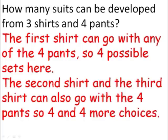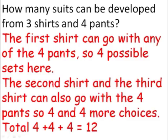Similarly, the second shirt and the third shirt can also go with the 4 pants. So 4 and 4 more choices for the second and third shirts. It means the total number of choices is 4 plus 4 plus 4 equals 12 choices.